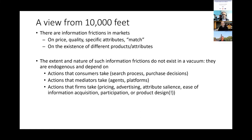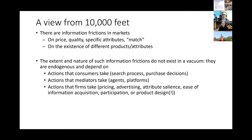A starting point for this session is that there are information frictions in markets. After Econ 101, that's the next thing I tell my students - it can be hard for consumers to figure things out. Those frictions come in all sorts of ways: there may be frictions about price, quality, specific attributes, your particular match with a product.